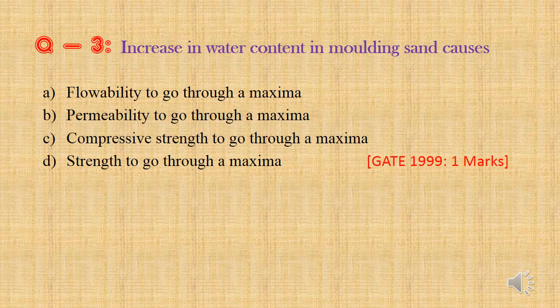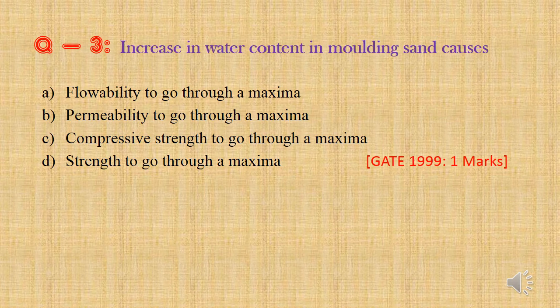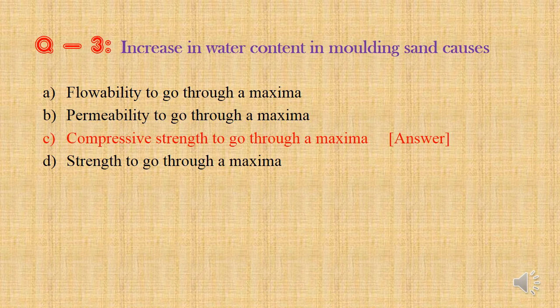Question 3: Increase in water content in molding sand causes — Option a: Flowability to go through a maxima, Option b: Permeability to go through a maxima, Option c: Compressive strength to go through a maxima, Option d: Strength to go through a maxima. Here, properties like flowability, permeability and strength will go through minima for increase in moisture content, but only compressive strength will go through maxima. So the answer is Option c: Compressive strength to go through a maxima.